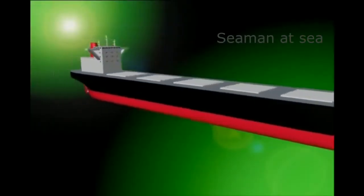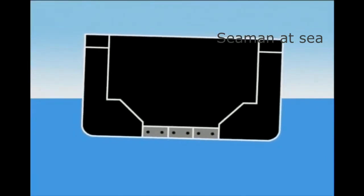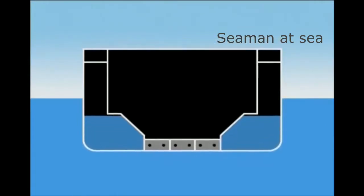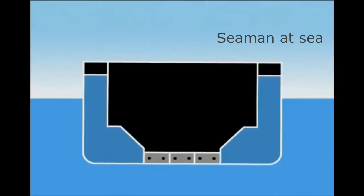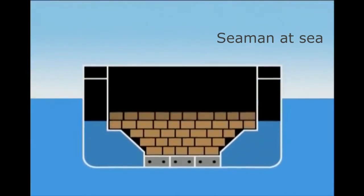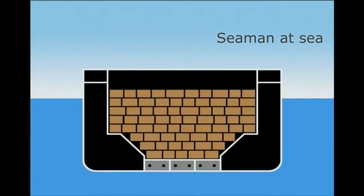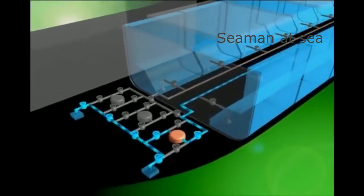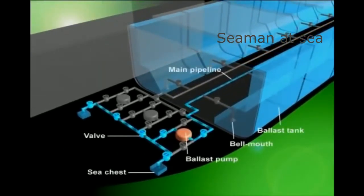Let's look at what ballast operations are and their purpose. Since a ship's draft is shallow while in ballast condition, it's susceptible to wind and wave impact. As a result, rolling increases and hull stability deteriorates. To improve hull stability, a ship's ballast tanks are filled with seawater. When loading a ship with cargo, seawater in ballast tanks is discharged. Such seawater filling and discharging are called ballast operations, which are conducted either by gravity or ballast pumps.